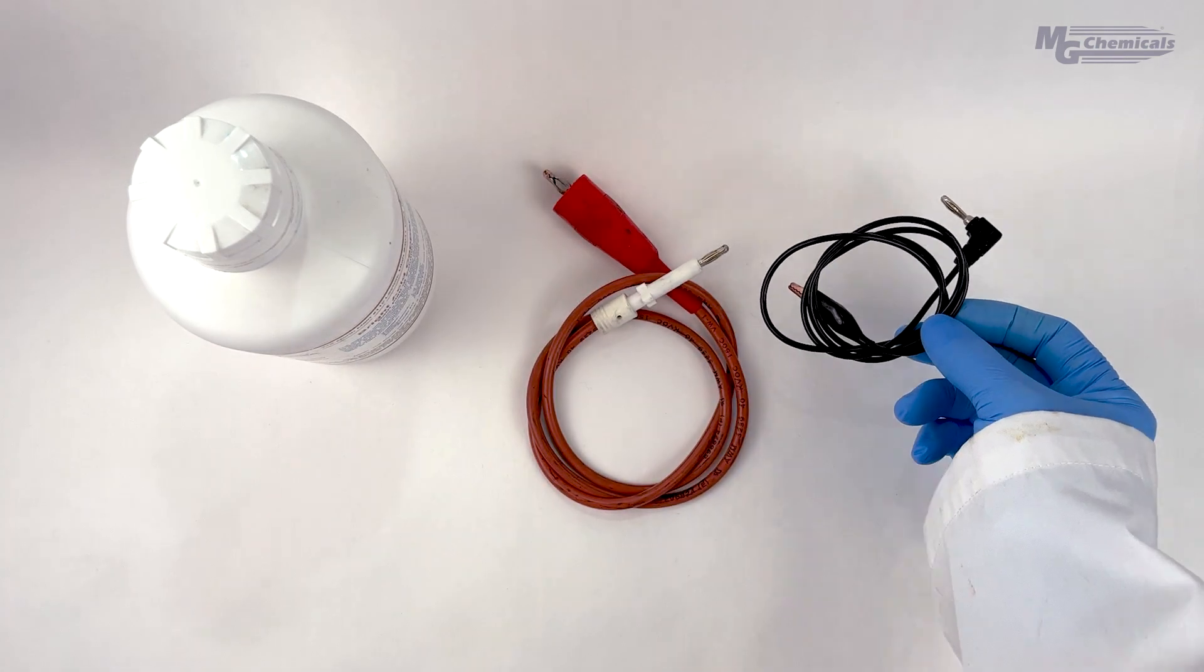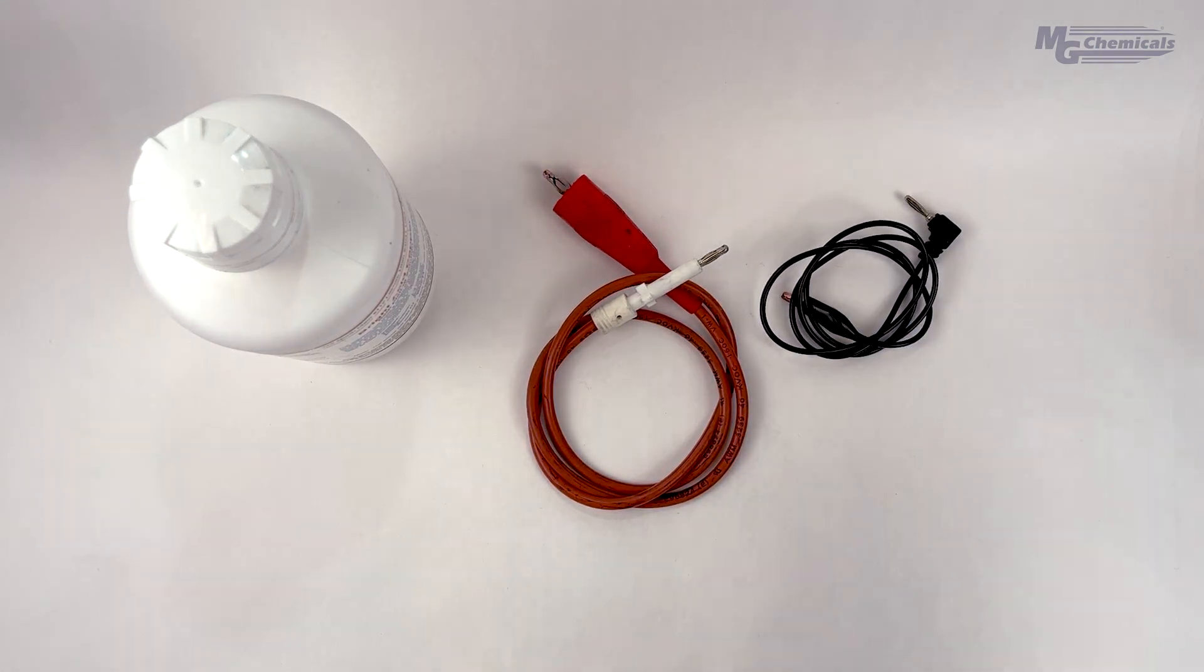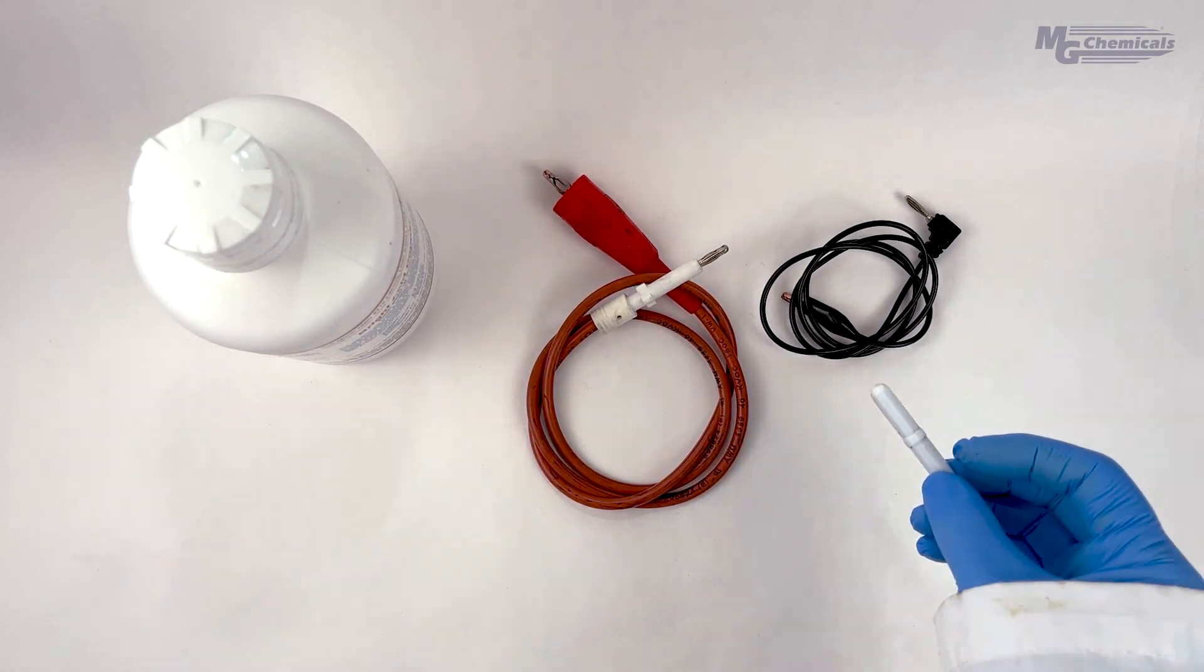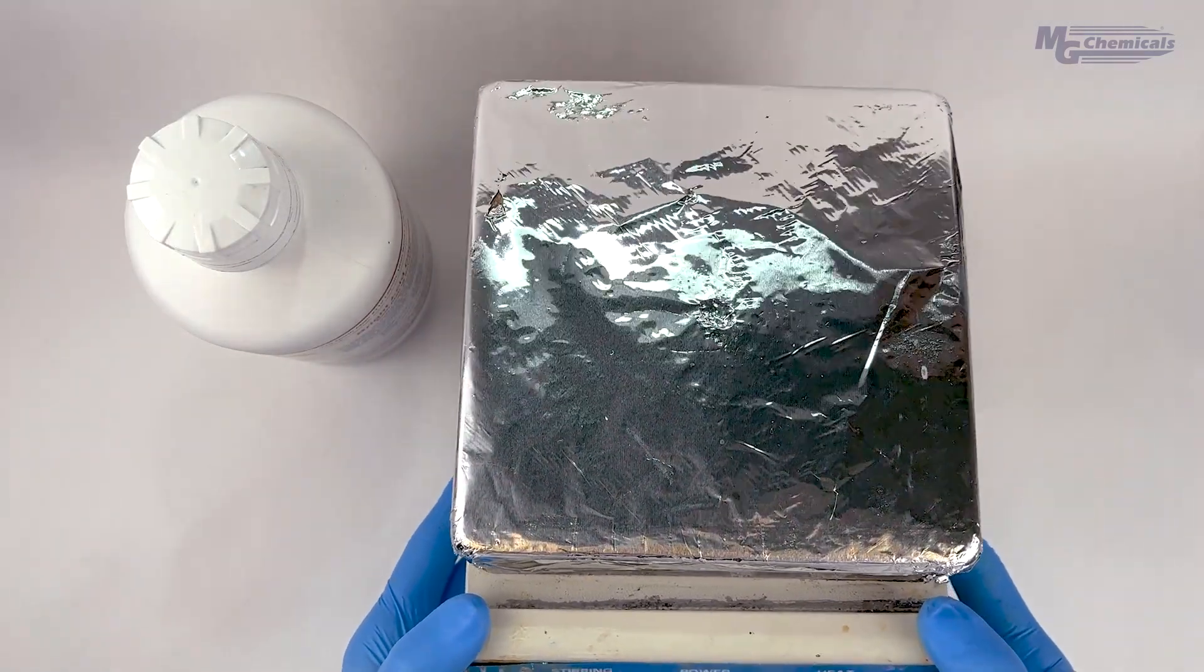Also needed are lead wires for the positive and negative terminals of the power source and a magnetic stir bar to keep the copper sulfate solution in constant agitation.